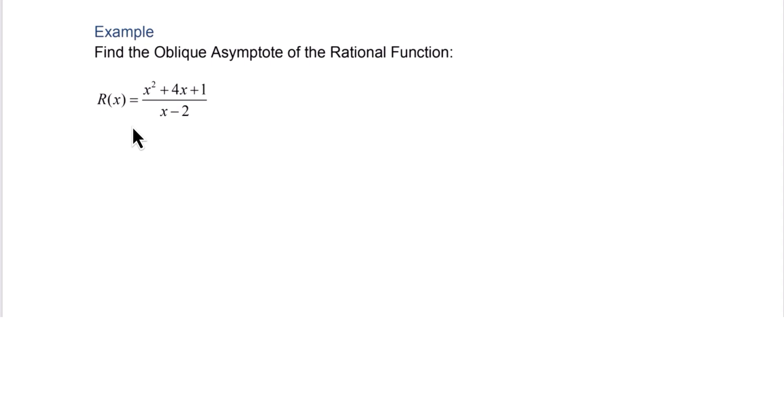To do that we need to use division, and typically we want to use long division, but in this case since the divisor, the bottom, is linear we can use synthetic division. So we'll list the coefficients of the numerator: 1, 4, 1, and then in the box we'll put the opposite of what we see here, 2.